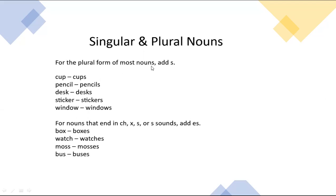For the plural form of most nouns, just add S — like 'cup' becomes 'cups,' 'pencil' becomes 'pencils,' 'desk' becomes 'desks,' 'window' becomes 'windows.' For nouns ending in CH, X, S, or S sounds, add ES. For example, 'box' ends in X so we add ES; 'watch' has CH so we add ES; 'moose' has S so we add ES; 'bus' ends in S so we add ES.